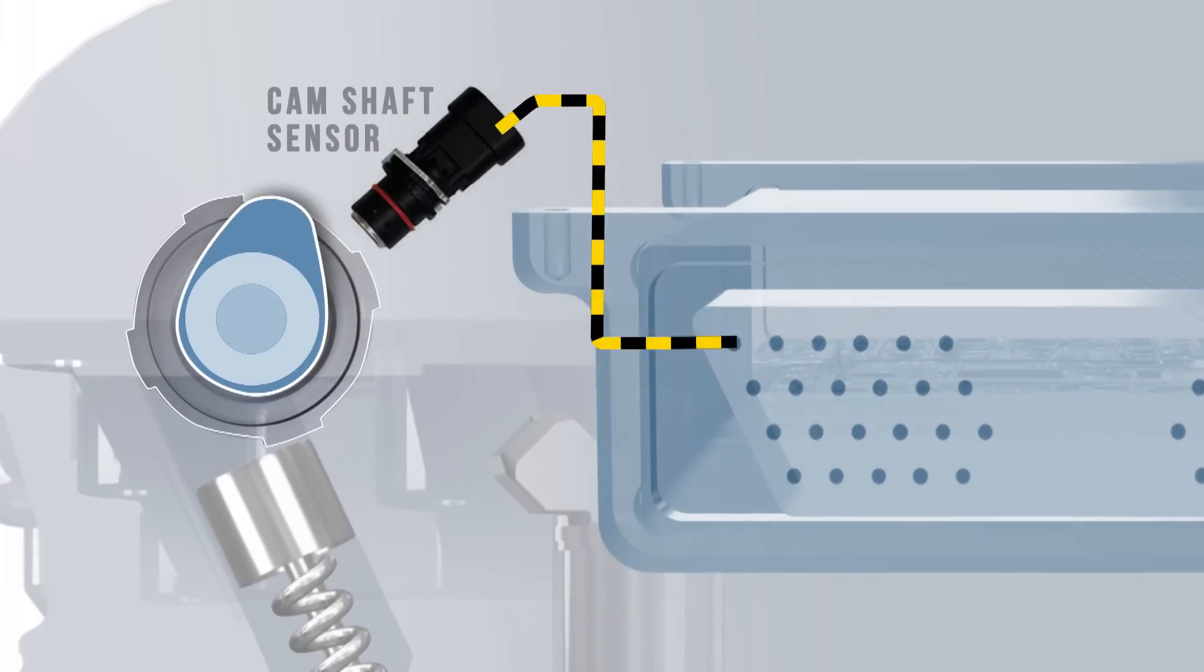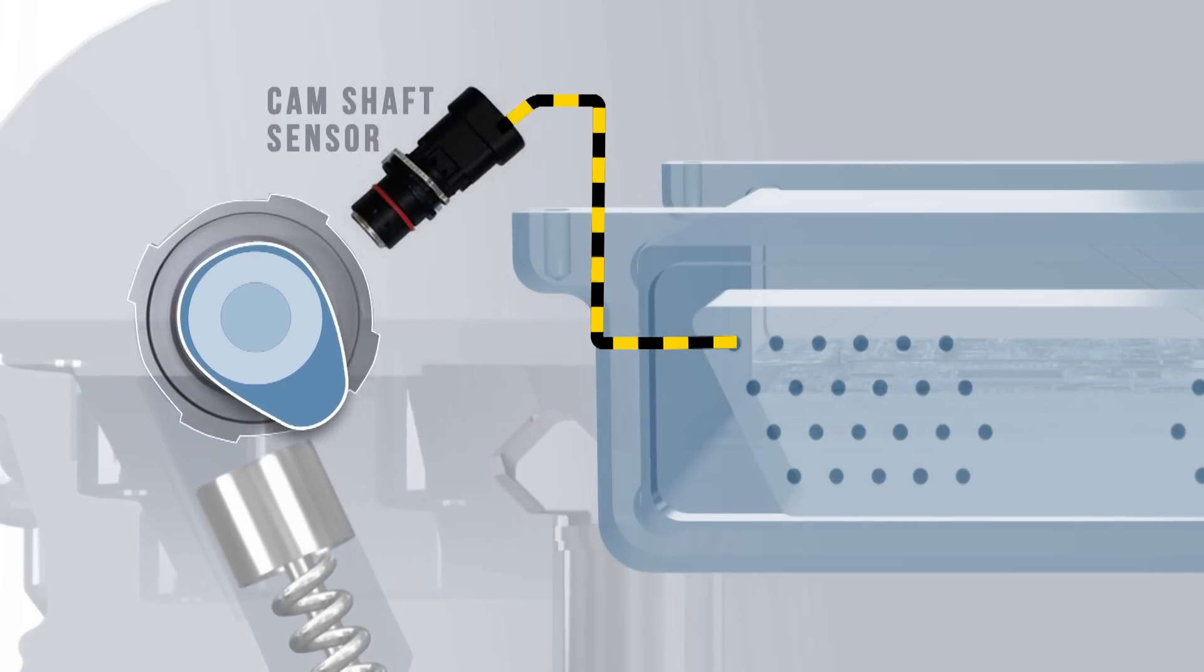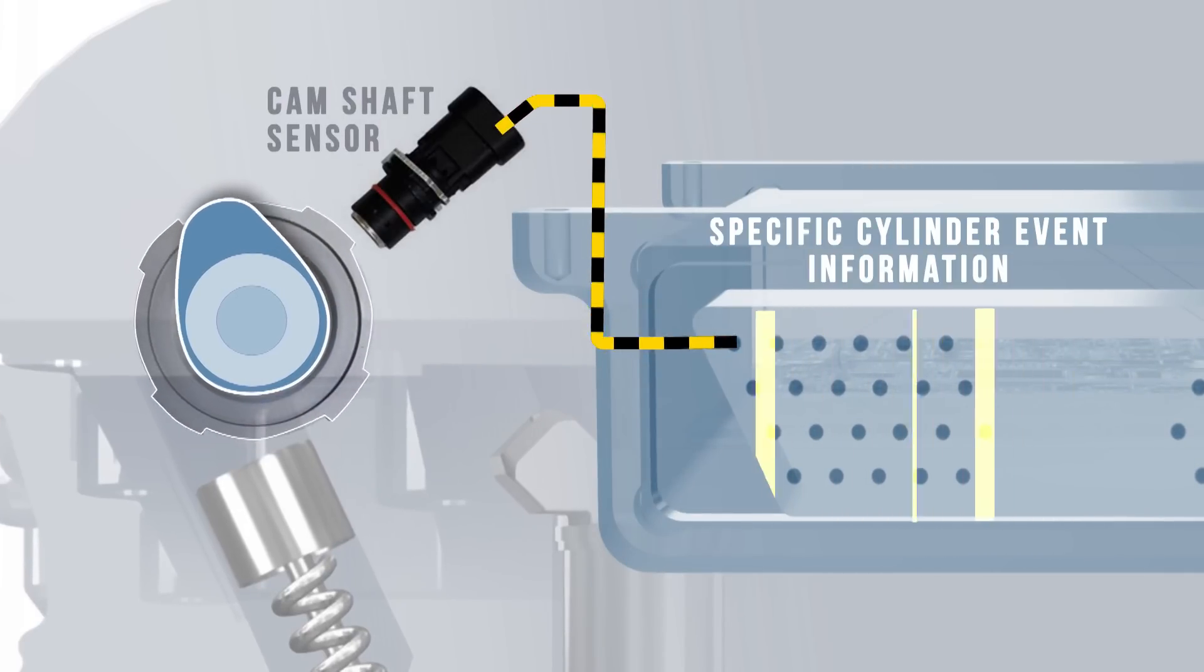The camshaft sensor is used to relay the exact position of the camshaft to the ECM for specific cylinder or event information.